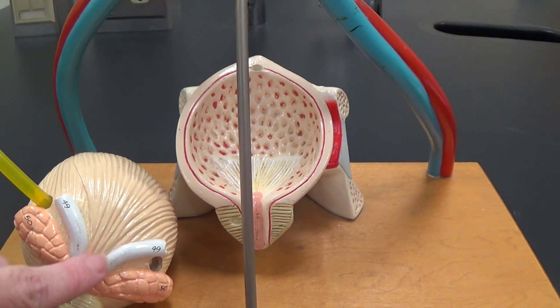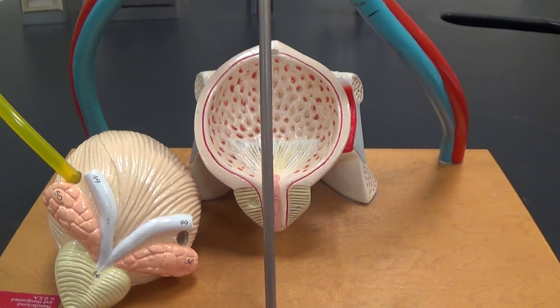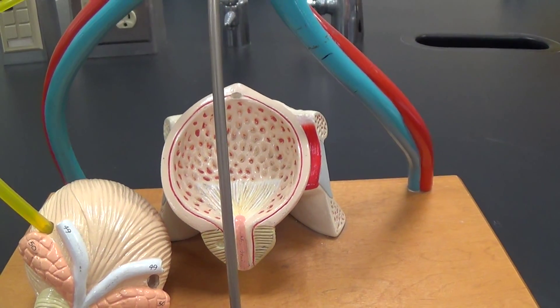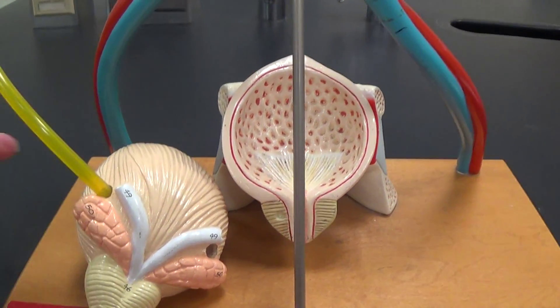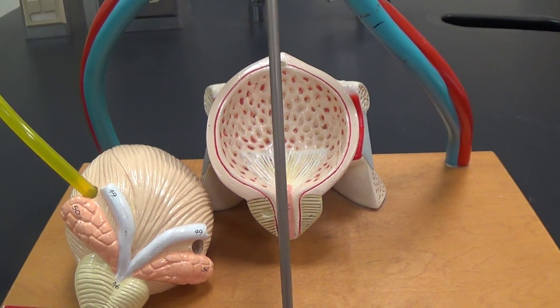These eyebrow-like structures are the vas deferens, or ductus deferens. That would be delivering material from the testes and epididymis up here. And again, this is the ureter. This is the hole for the second ureter here.